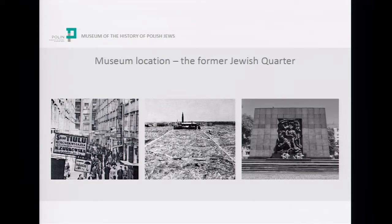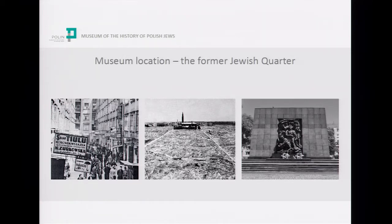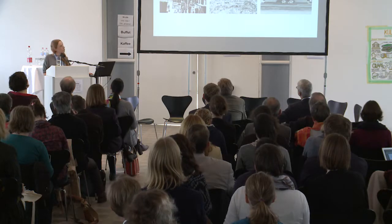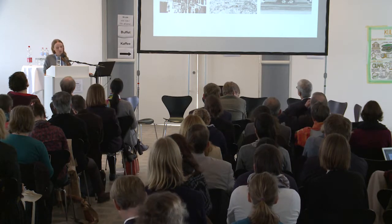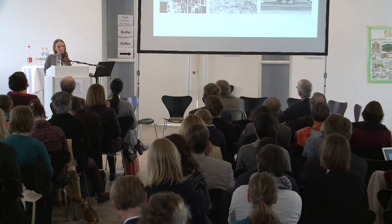The museum was built in the center of Muranów, which is the former Jewish quarter of Warsaw. The first picture shows the Jewish quarter buzzing with life before the Second World War. In the middle, you can see the same area razed to the ground by the Nazis in response to the Warsaw Ghetto Uprising. There was nothing left from the Jewish quarter, just a sea of rubble. On this rubble, a monument commemorating heroes of the Warsaw Ghetto Uprising was erected in 1948, and the new Polin Museum of the History of Polish Jews was built on the square facing this very monument.